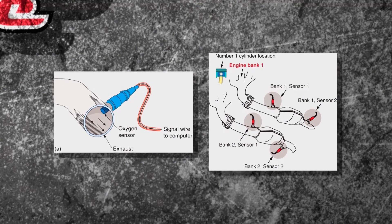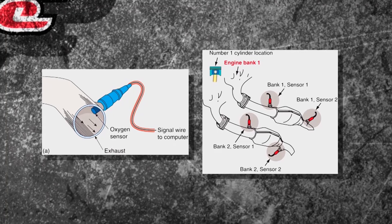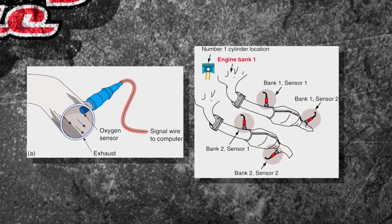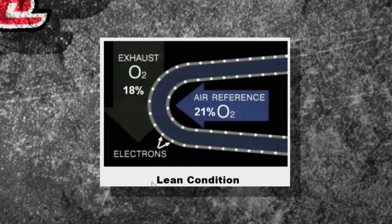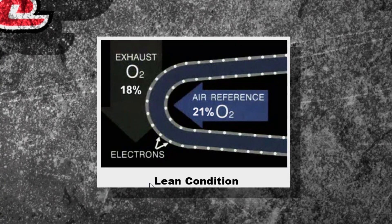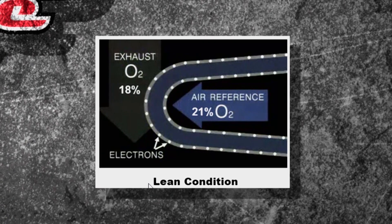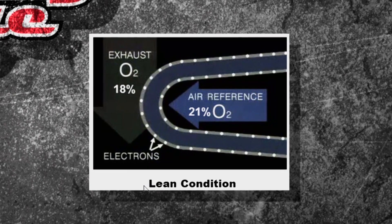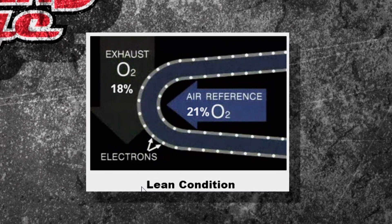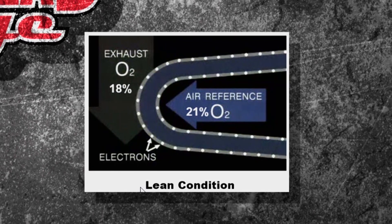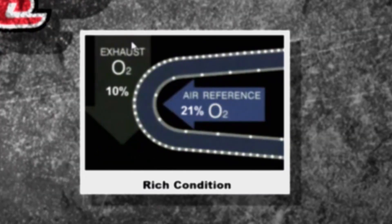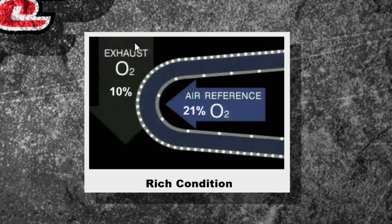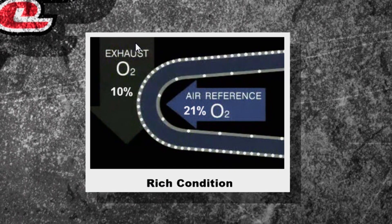You can see the oxygen sensor right there in the exhaust — you could have multiple oxygen sensors. It works by sensing oxygen, or a lack of oxygen; it doesn't sniff fuel. There's 21% oxygen in the outside atmosphere, so if you have 18% in the exhaust, the electron difference is small and you get low voltage — that's a lean condition.